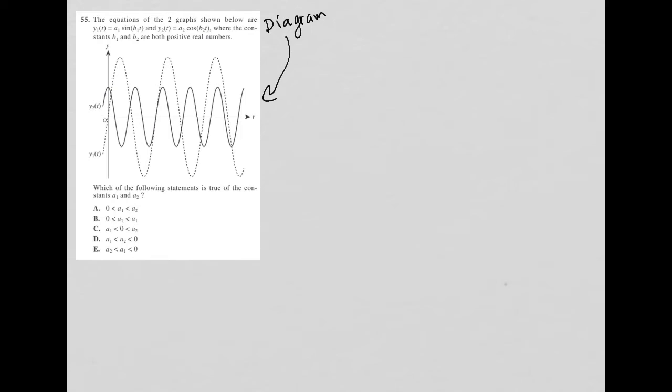The question says the equations of the two graphs shown below are, and I'll just write these down again: y1 of t is equal to a1 sine b1 times t.